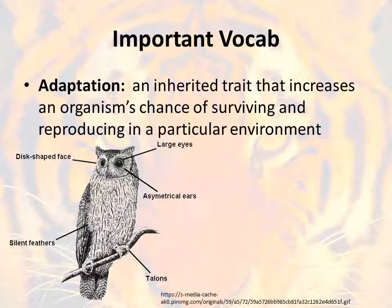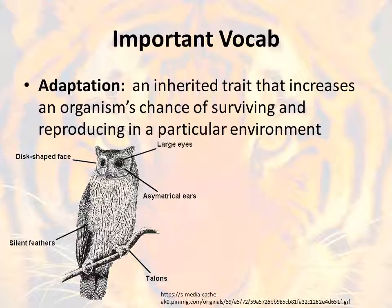When we talk about adaptation, this is going to be an inherited trait that will increase an organism's chance of surviving. If they survive, that gives them the chance to live long enough to reproduce in their particular environment, and then we should see more creatures with those traits. Using the example of an owl, it has very large eyes — a huge advantage. An owl that hunts at night needs to capture whatever light it can to see its prey. Even the talons it uses to perch on a tree could be considered an adaptation helping it survive. Because that creature has those characteristics, future generations of owls should carry on those traits.